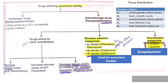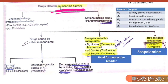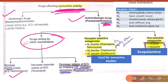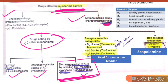Drugs affecting muscarinic activity include cholinergic (parasympathomimetic) and anticholinergic (parasympatholytic) drugs. Anticholinergics are categorized by mechanism. We have hemicholinium, which decreases choline uptake; vesamicol, which decreases vesicular uptake; and botulinum toxin. An important MCQ point: botulinum toxin decreases acetylcholine release by inhibiting calcium-mediated exocytosis — remember this.